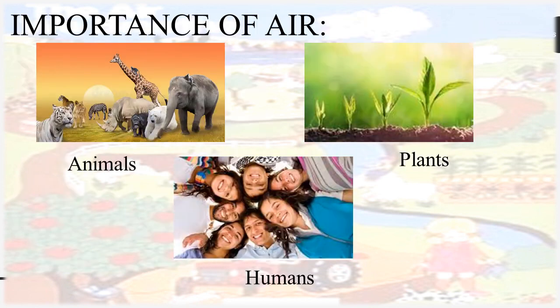Let's start with the topic: importance of air. As we have read in Chapter 1, Living and Non-living Things, animals, plants and humans are living beings. All living beings need air to live. Animals, plants and humans breathe in air. Air is all around us. We cannot see the air, but we can feel it when it moves.